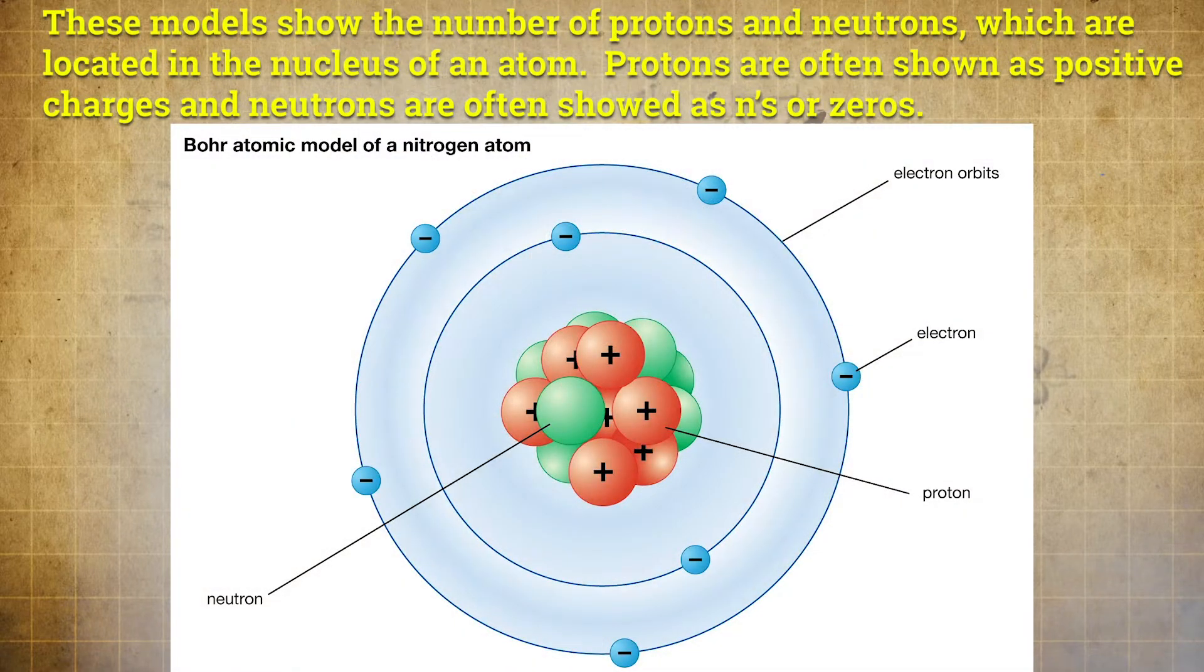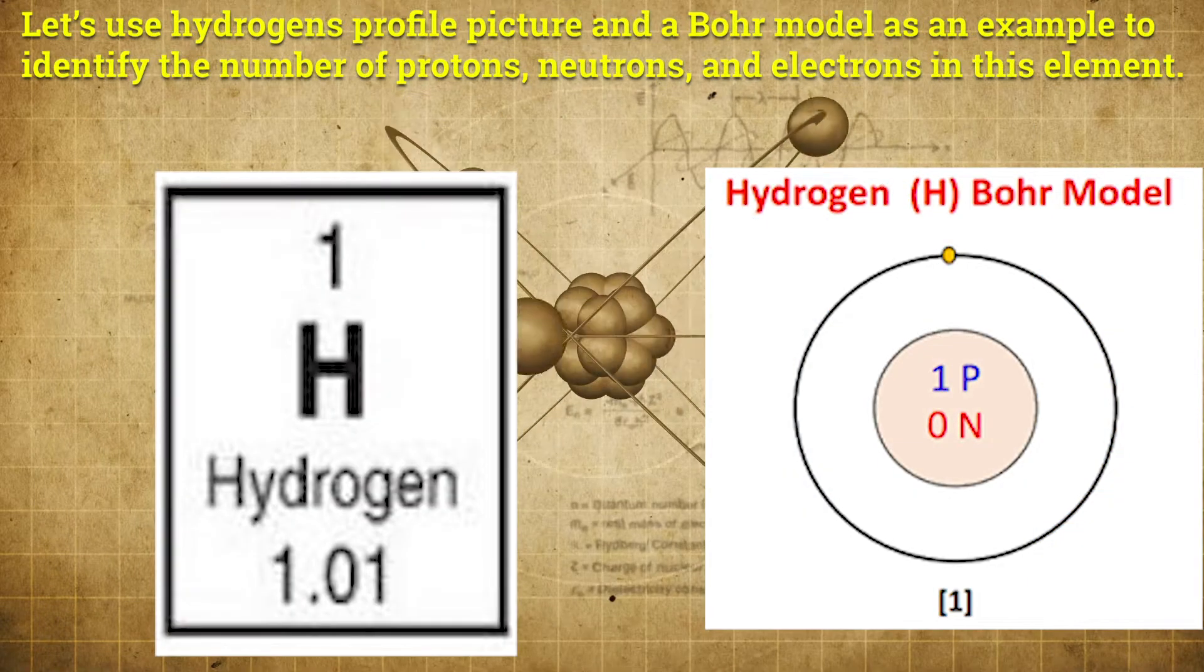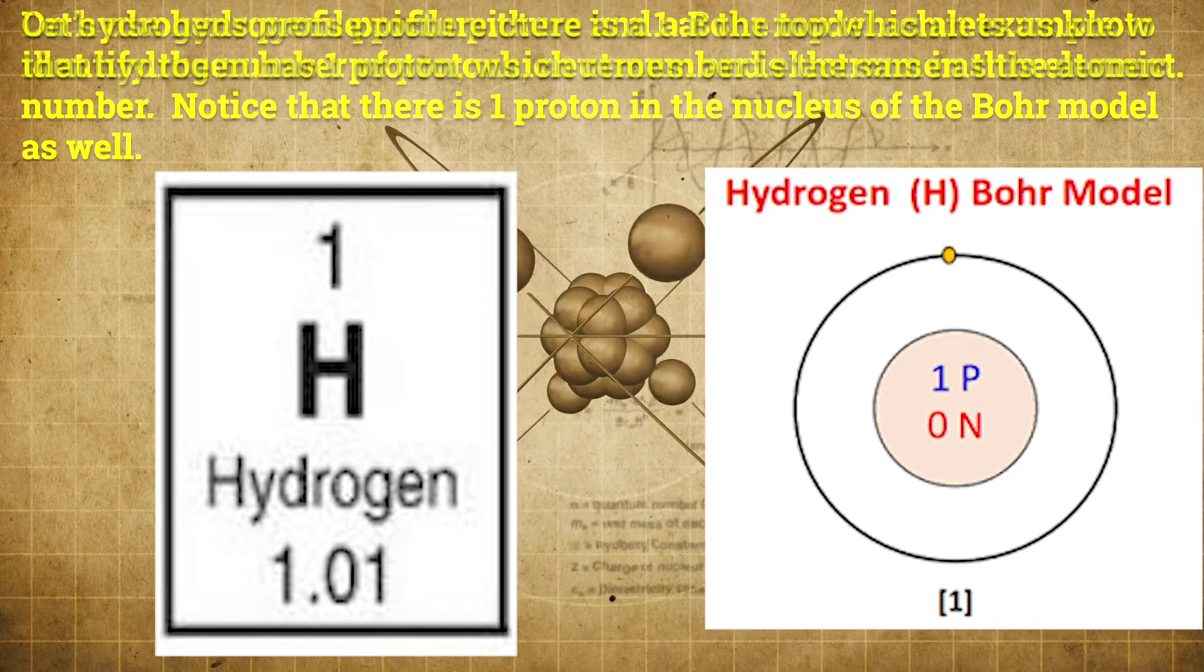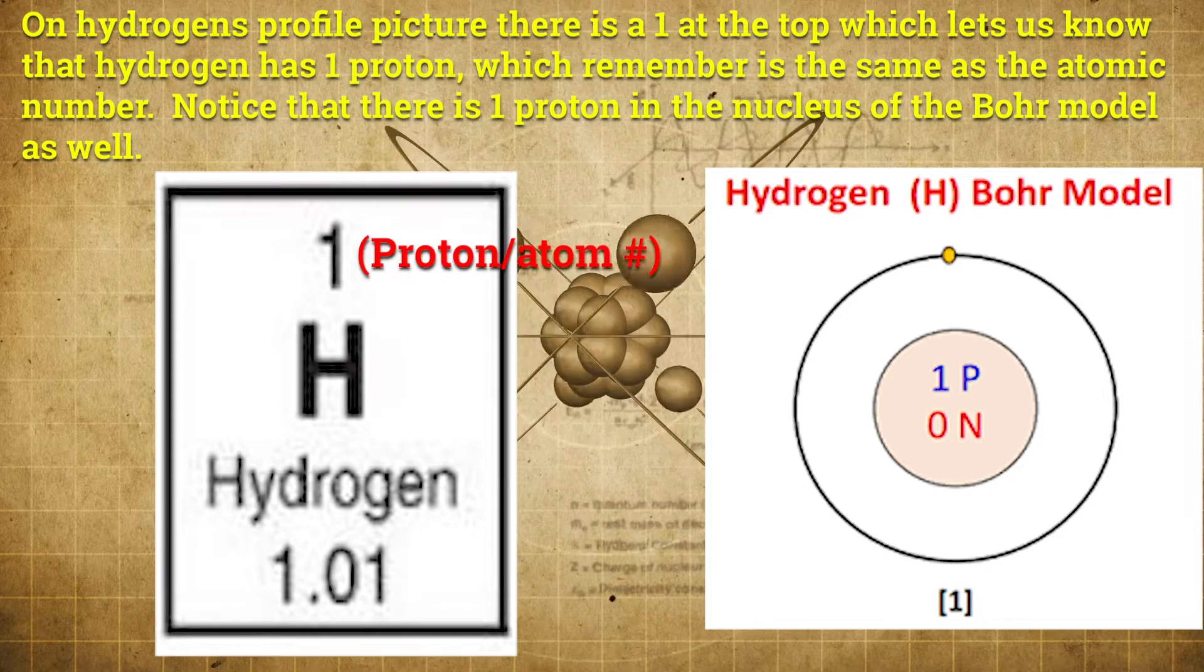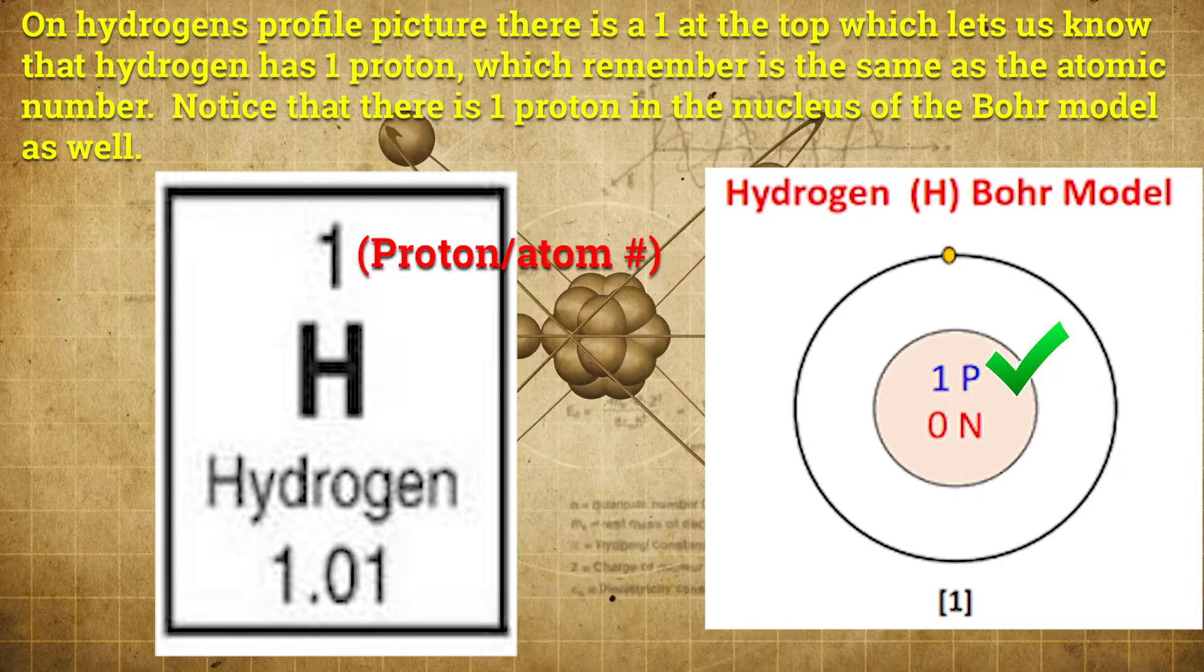Now let's talk about atomic Bohr models. These models show the number of protons and neutrons, which are located in the nucleus of an atom. Protons are often shown as positive charges, and neutrons are often shown as N's or zeros. It also shows the number of electrons surrounding the nucleus in the electron cloud, which is sometimes represented by negative signs or circles in the electron cloud. Let's use hydrogen's profile picture and the Bohr model as an example to identify the number of protons, neutrons, and electrons in this element. On hydrogen's profile picture, there is a 1 at the top which lets us know that hydrogen has 1 proton, which remember is the same as the atomic number. Notice that there is 1 proton in the nucleus of the Bohr model as well.